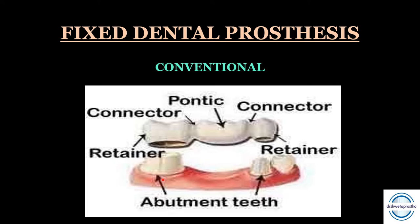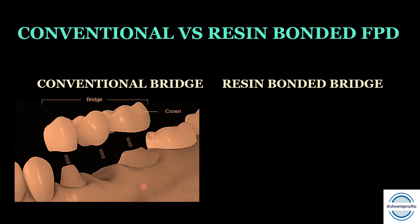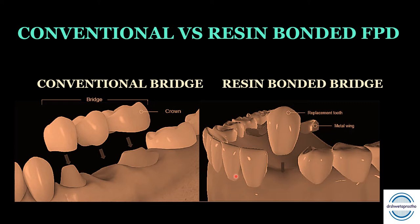Let us compare the conventional bridges with the resin bonded bridges. In the conventional bridge we have retainers, pontic, and connectors seated onto the abutment tooth. In the resin bonded bridge, there is a metal ring and the replacement tooth or pontic. The retainer is reduced to a metal ring, meaning reduction of the abutment is decreased — that is why they are called conservative bridges. They are called resin bonded because resin cements are used to bond these bridges onto the abutment teeth.